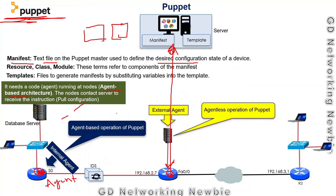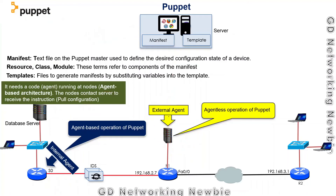In a second flavor of Puppet, instead of installing software directly on the networking devices, external agents are used. These external agents communicate with the server on behalf of the networking devices, and the devices receive their instructions through these agents. This is the agentless operation of Puppet.